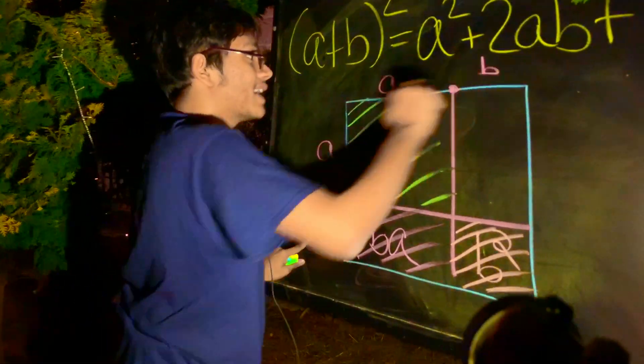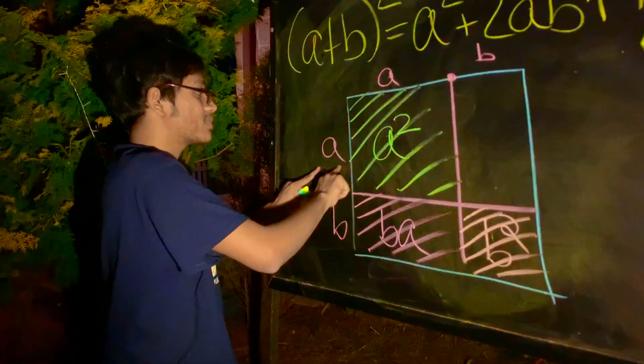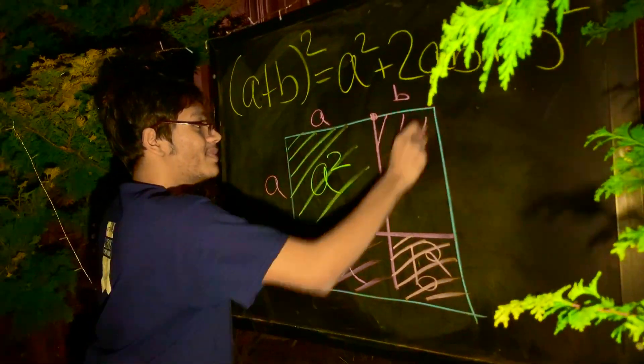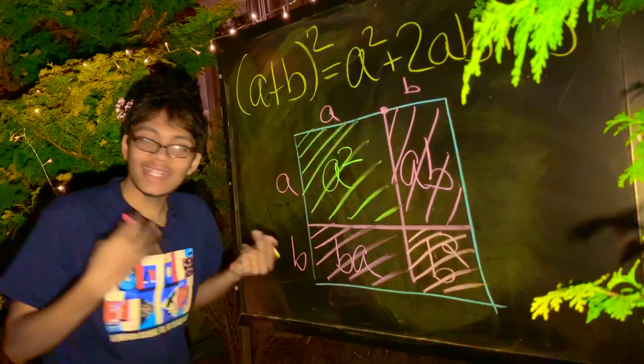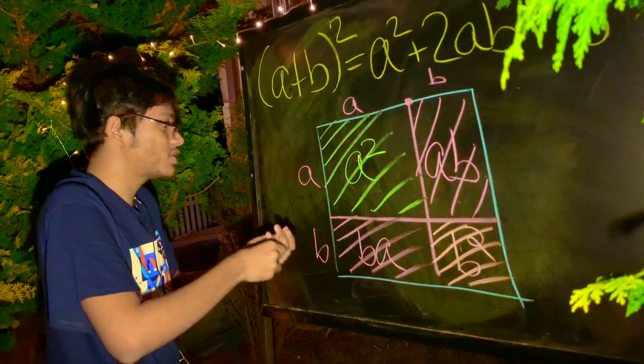Likewise, what is this? What is A times B? Well, that means the area of this rectangle is simply A times B, which is AB. And now do you see what's happening here, ladies and gentlemen?